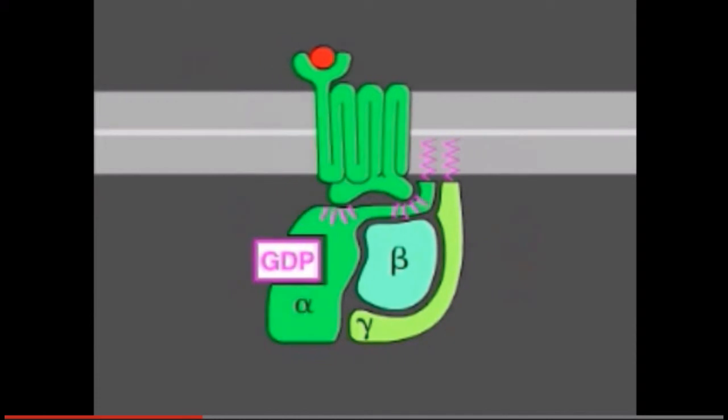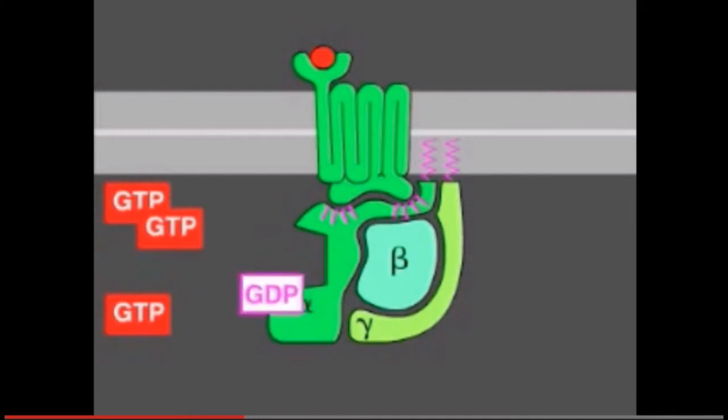it only binds after the receptor is activated. In either case, an activated receptor induces a conformational change in the alpha subunit, causing the GDP to dissociate. GTP, which is abundant in the cytosol, can now readily bind in place of the GDP.